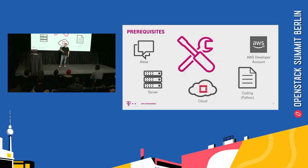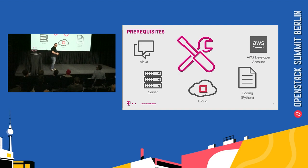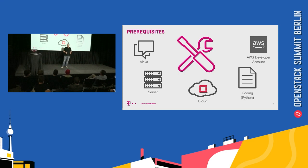So what do we need? We need one of those — an Alexa Dot or Echo Show, whatever, just any device. We need a server where our application is running. Of course, we need a cloud. We need some Python to do a bit of coding. And of course, AWS, because that's where the Alexa Skill Kit is running.